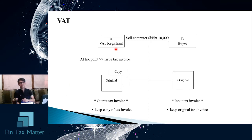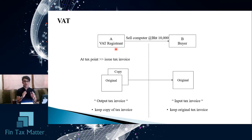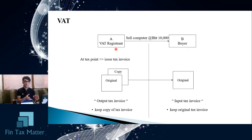To summarize with an example: assume a transaction between VAT registrant Mr. A and buyer B, who is also a VAT registrant. Both buyer and seller are VAT registrants. A is the seller of a computer valued at 10,000 baht, selling to B the buyer. At the tax point — which is the selling of goods — the tax point is the day the seller delivers the product to the buyer.